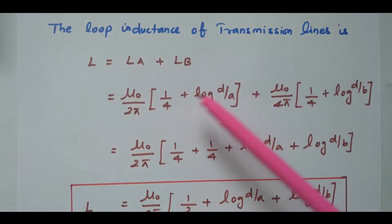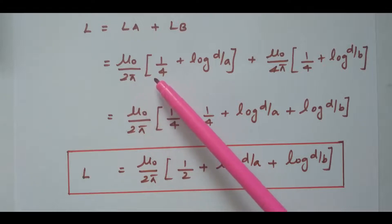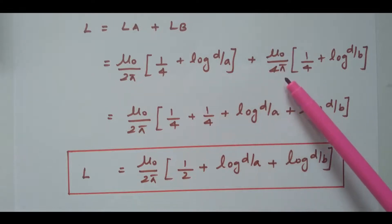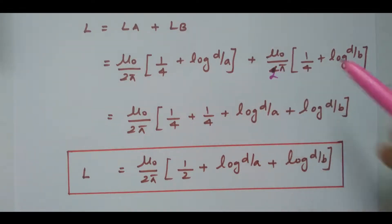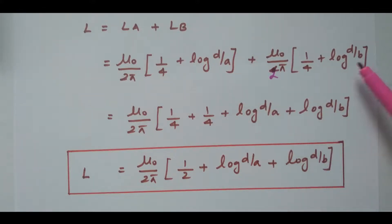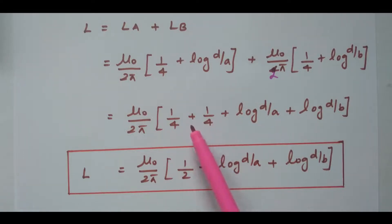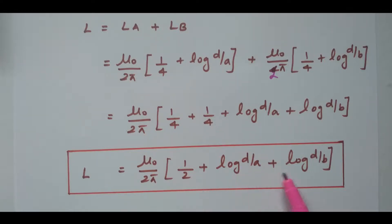The loop inductance of the transmission line is L = LA + LB = (µ₀/2π)(1/4 + log(D/a)) + (µ₀/2π)(1/4 + log(D/b)). Taking µ₀/2π as a common factor, and adding 1/4 + 1/4 = 1/2, the final expression for the loop inductance of the two-wire transmission line is: L = (µ₀/2π)(1/2 + log(D/a) + log(D/b)).